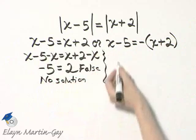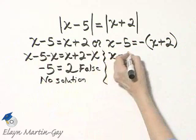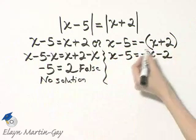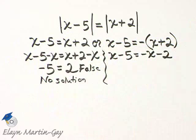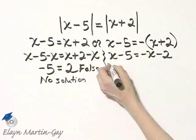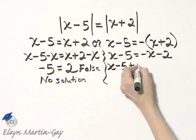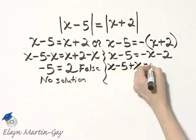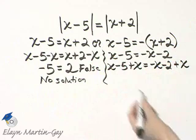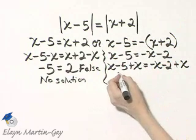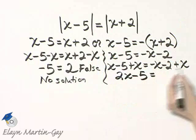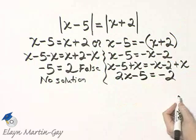What happens on the other side? I'll have x minus 5 is equal to negative x minus 2, taking off parentheses and distributing. Now, I will add x to both sides. So here's the left side, I'll add x. And here's the right side, and I'll add x. Notice what happens on the left side, x plus x, that's 2x, minus 5 is equal to, these x's subtract out, and I get negative 2.